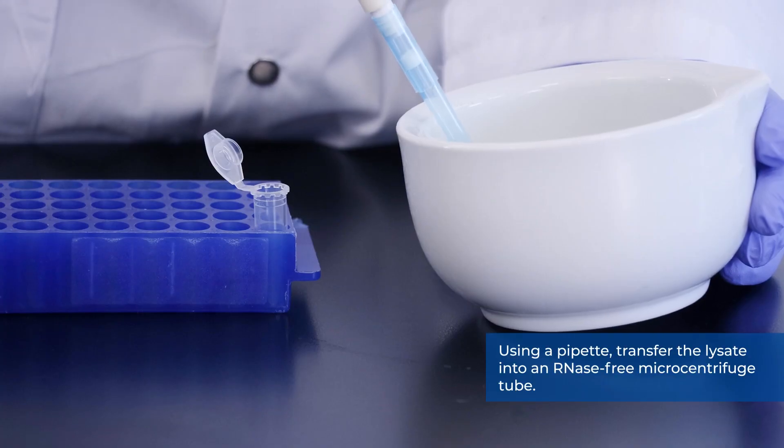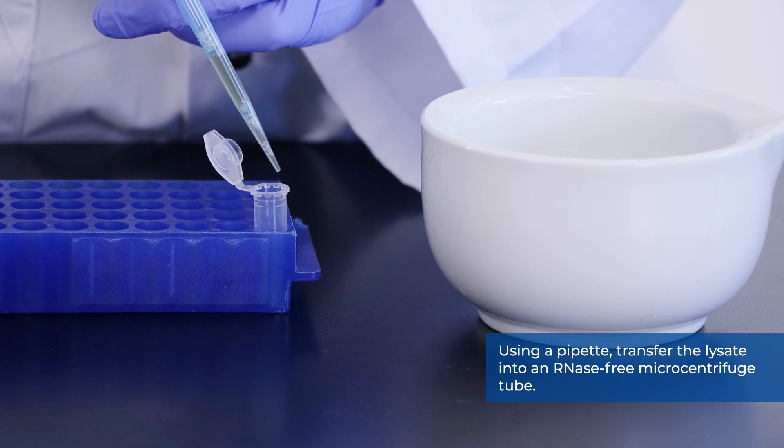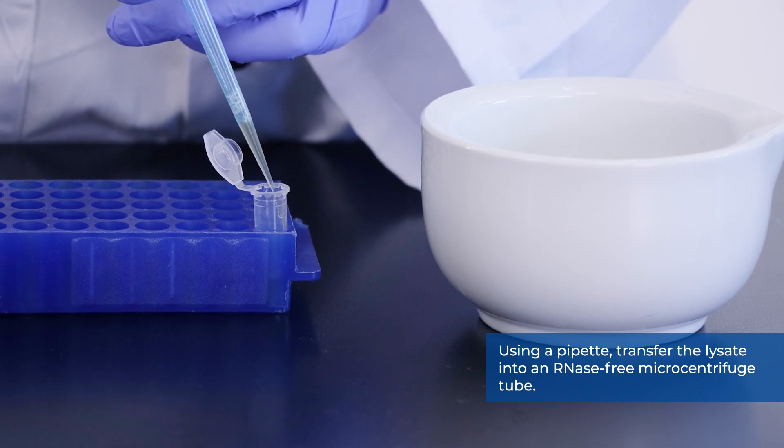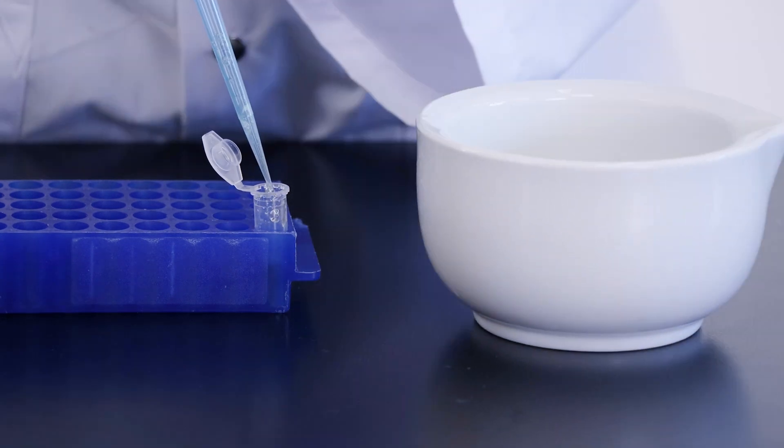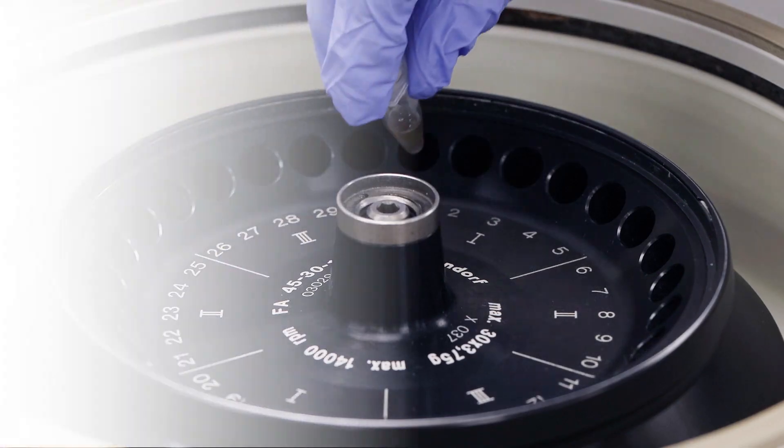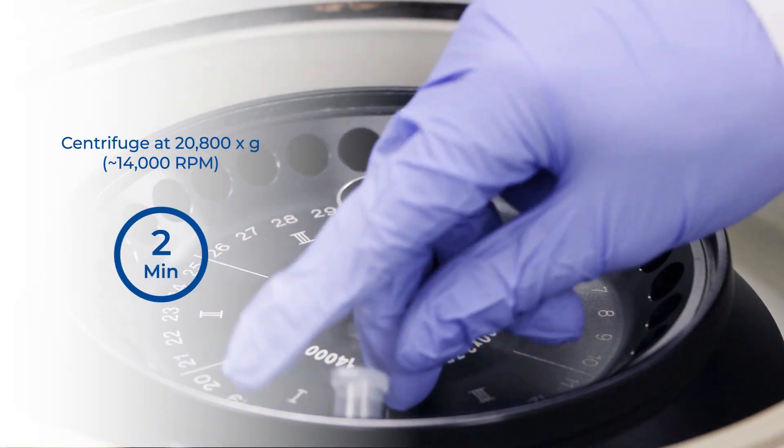Using a pipette, transfer the lysate into an RNase-free microcentrifuge tube. Spin the lysate for 2 minutes to pellet any cell debris.